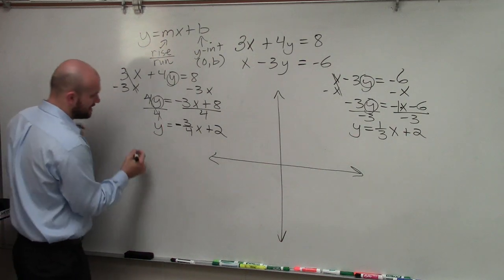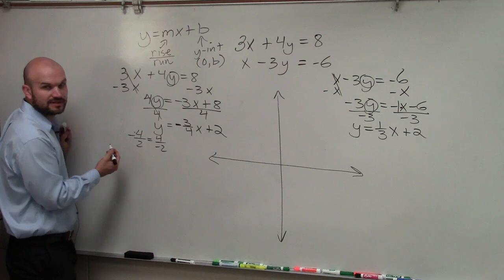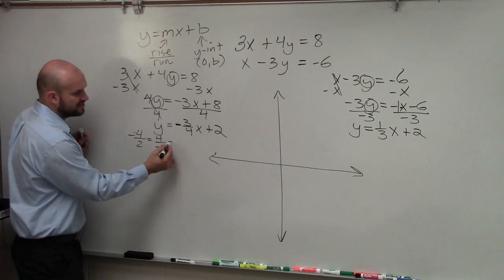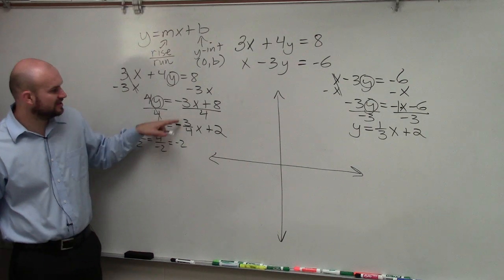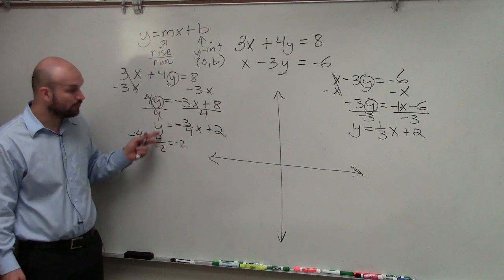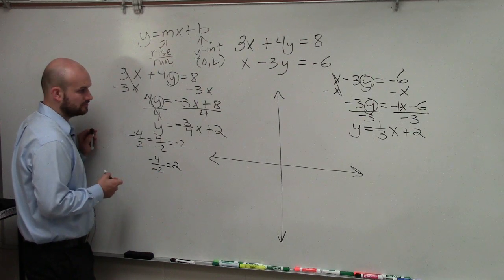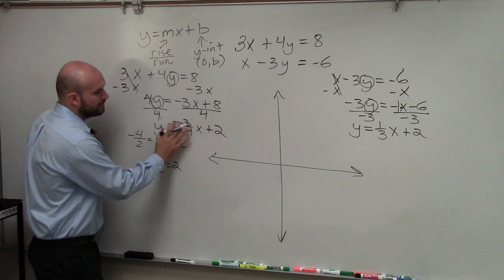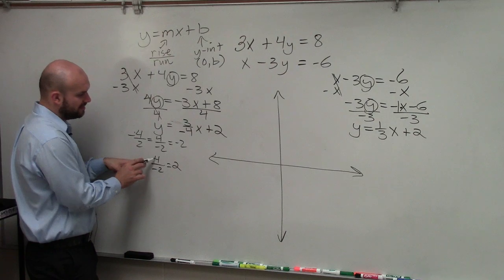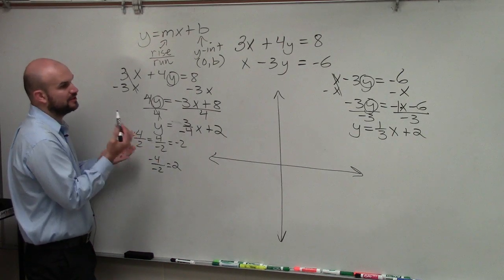When you have a negative slope, understand that negative 4 divided by 2 equals 4 divided by negative 2 — the answer is negative 2 either way. It doesn't matter if you have a negative divided by a positive or a positive divided by a negative; the answer is still going to be negative 2. So when you have a negative slope, put the negative sign in either the numerator or denominator — not both. Because negative 4 divided by negative 2 equals positive 2, which would give you a wrong solution. The negative must be in one or the other, not both.